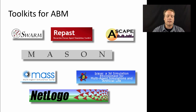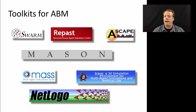Ascape was developed in part at the Brookings Institute and was created primarily to support the development of the Sugarscape models used by Josh Epstein and Rob Axtell in their foundational book on agent-based modeling, which is about 20 years old now.